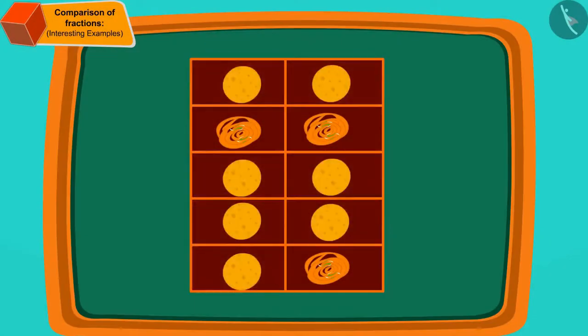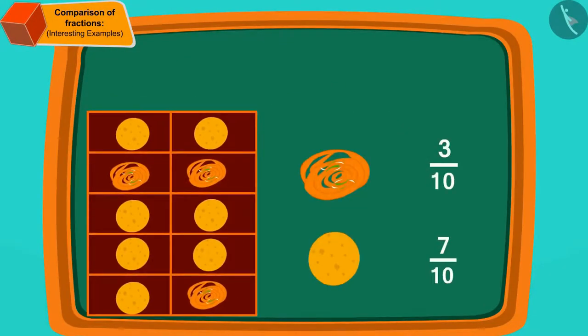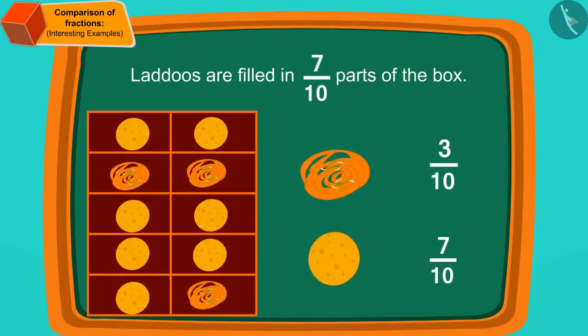Correct! Laddus are filled in the largest part of the box — 7 tenths part.